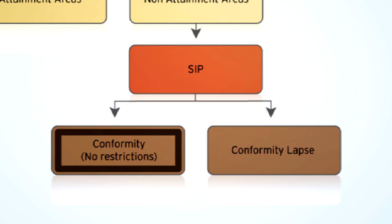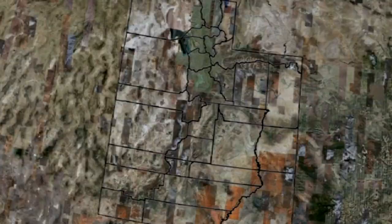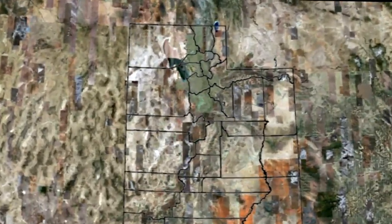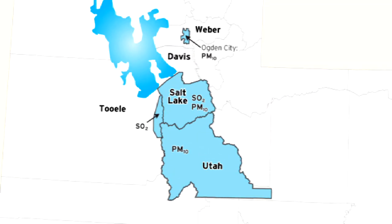If the area emissions are staying within the SIP allowances, or budgets, then the area is said to be in conformity. Here are the current locations in Utah that are designated as non-attainment areas. The SIPs for these areas are plans designed to reduce transportation-related pollutants to federal standards within two years.